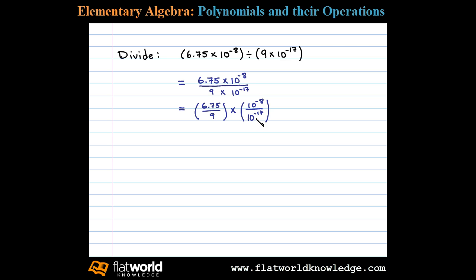Doing this, 6.75 divided by 9 is 0.75, and then when we divide here we're going to have to subtract those exponents, so we have negative 8 minus negative 17.